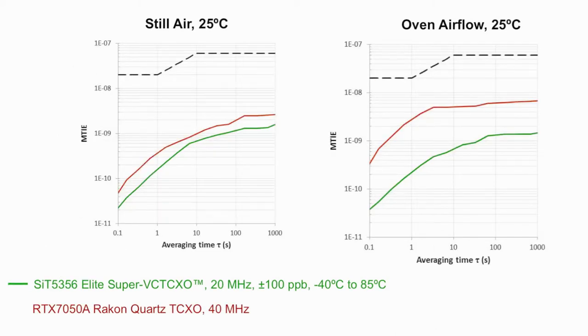Maximum time interval error is another means of measuring clock wander performance which complements TDEV from the previous slide. In this example, the performance of the Elite TCXO in the presence of airflow again exceeds that of quartz by a significant 7 times the margin due to the reasons mentioned previously.